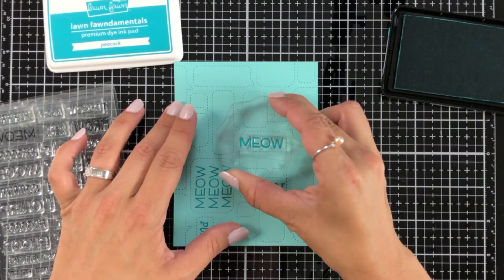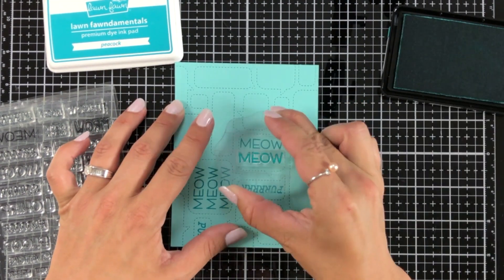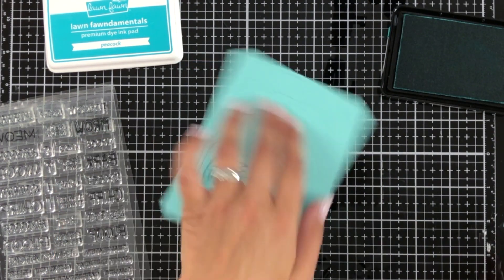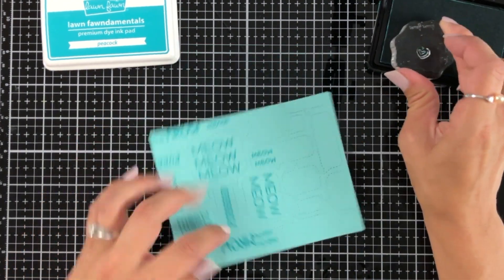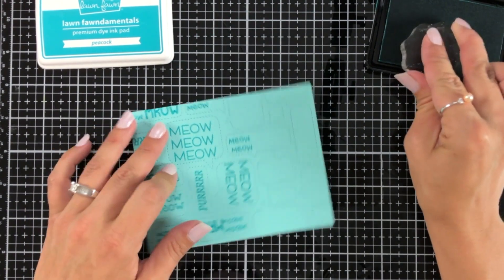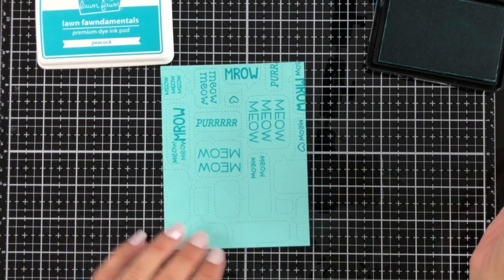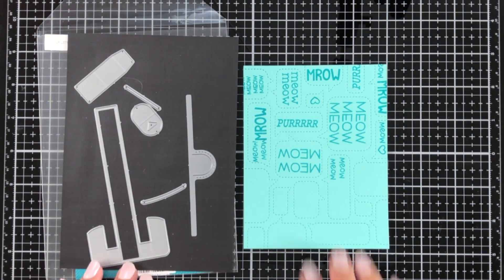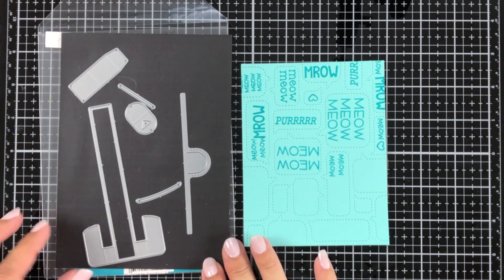Once I have the top part of my card mostly stamped, I also bring in this cute little heart. There are a ton of hearts on the Lawn Fawn stamp sets. This one might be from Meow You Doing. I can't remember offhand, but grab a small heart and it's really cute to add that in those little small bubbles.